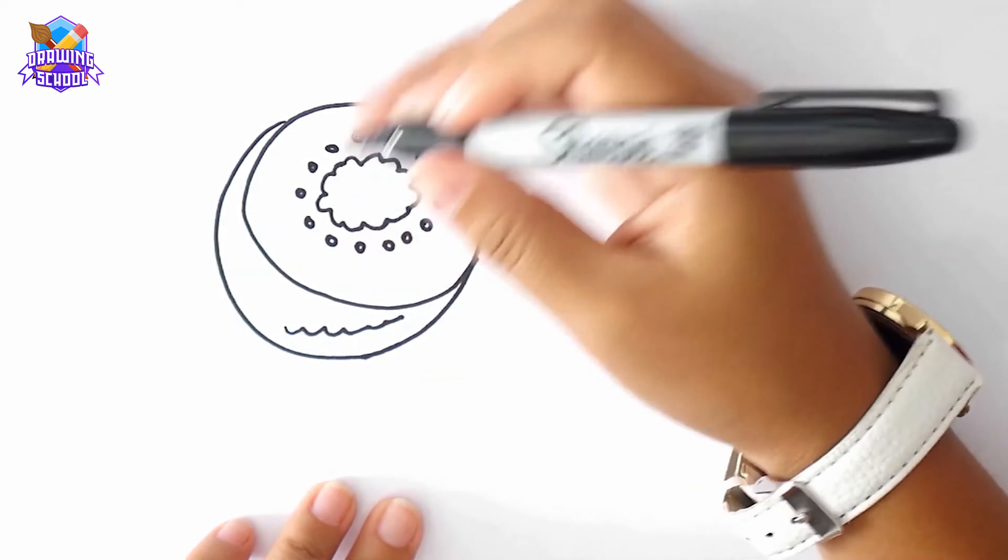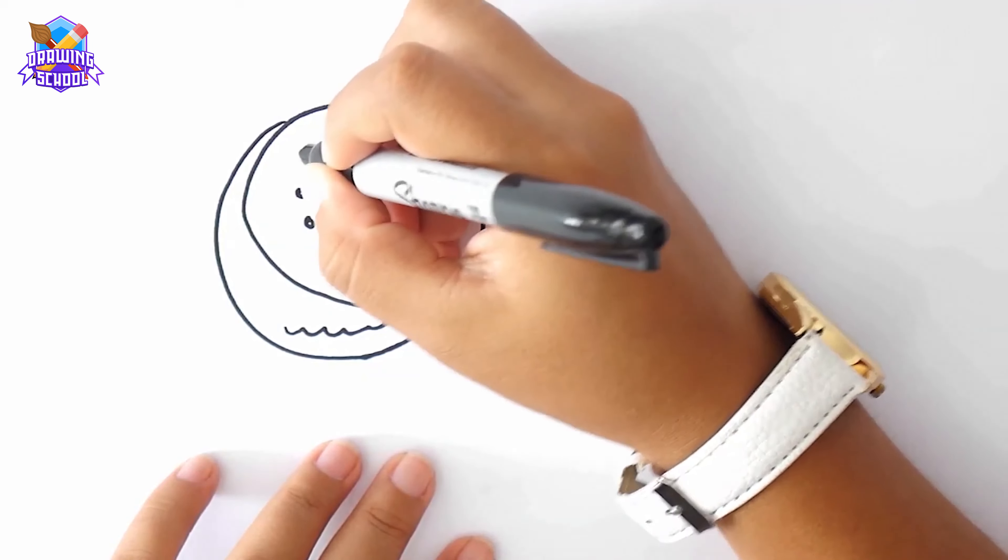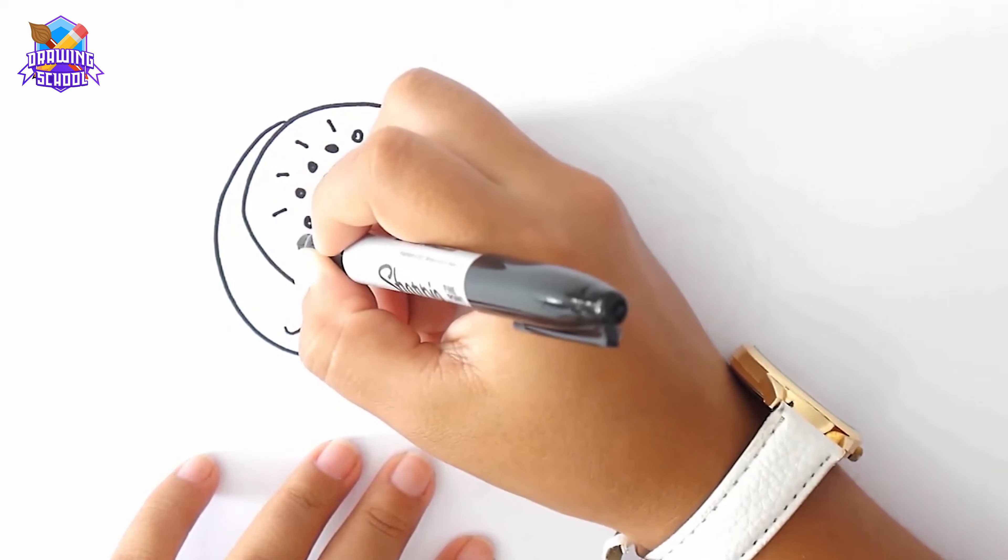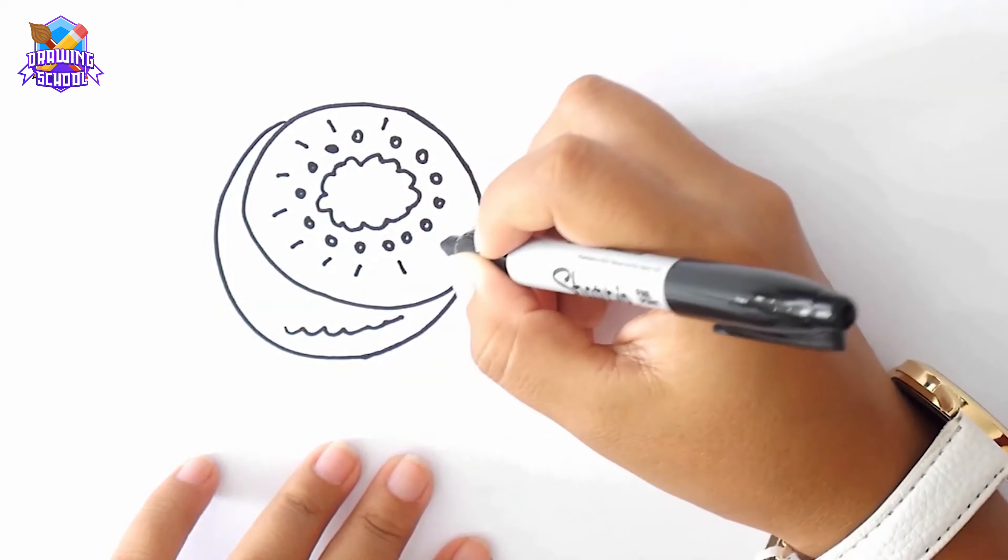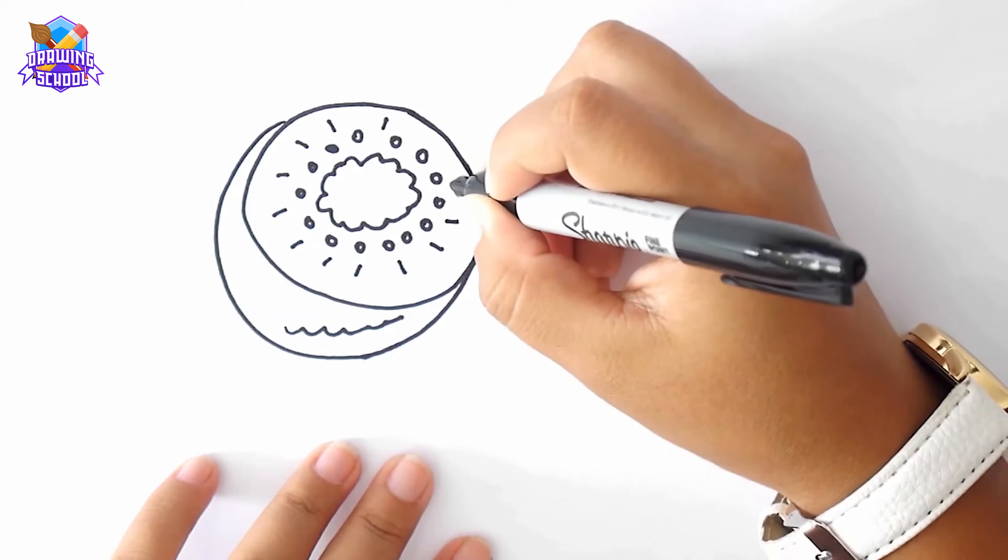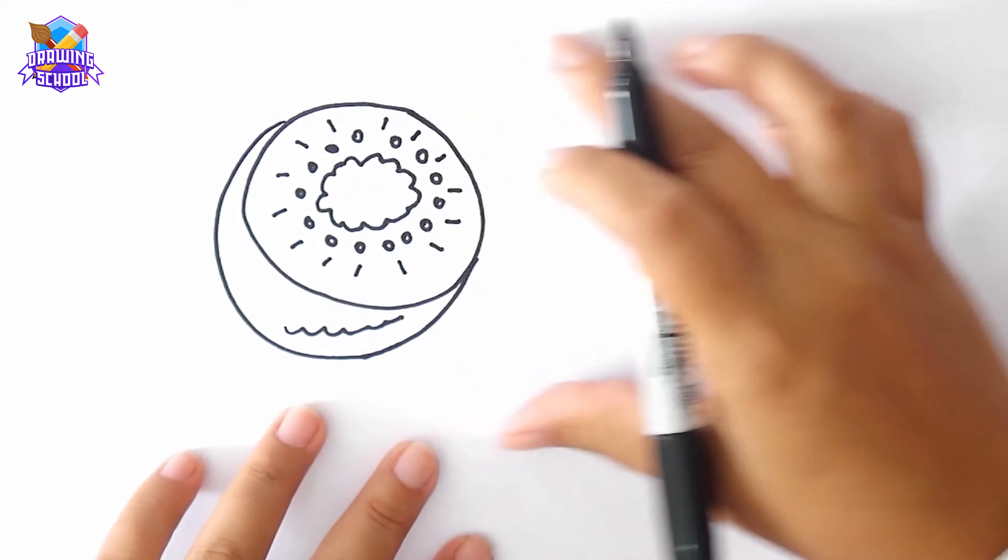Like this. You can do them in different sizes so it looks even better. We add some lines like this and we can also draw some slices in here too.